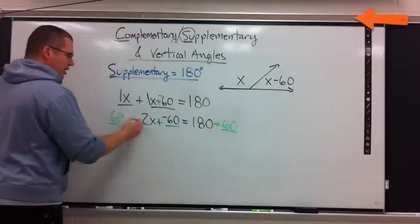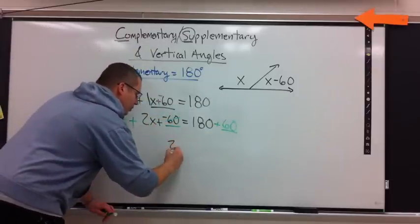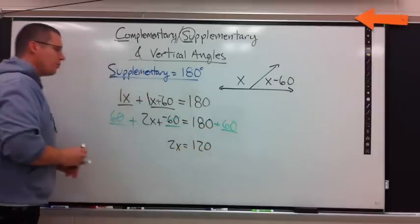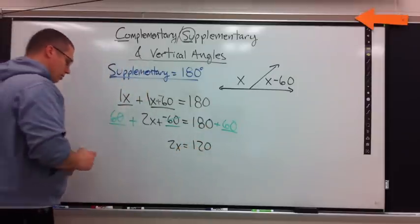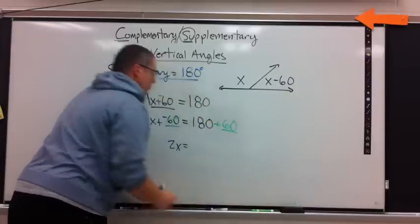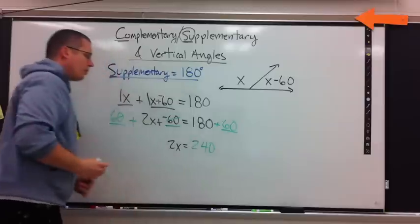I need to get rid of the added number first. What do I add to both sides? Positive 60. It's opposite. Positive 60. 60 and negative 60 cancel out. I'm left with 2X equals 120. Oops, I subtracted. I should have added.